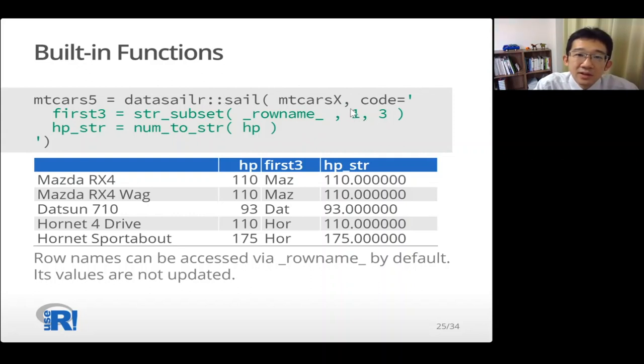So this function extracts index from index 1 to index 3 of this string. So in this case, extracting index 1 to index 3, extracting first three letters of row name. And this is assigned to this first3 column. And num_to_str converts number to string. And in this table, left aligned means it's string. So this column is string, it's converted successfully.